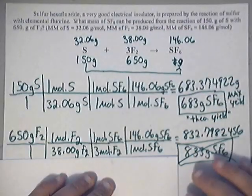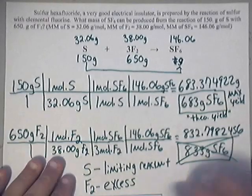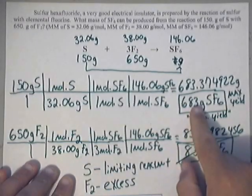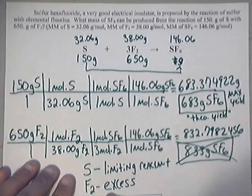And probably something else that you would want to know is this. The sulfur is your limiting reactant because it gave you your maximum yield and the one that did not is your excess which is the F2. Alright guys. I hope this helps.